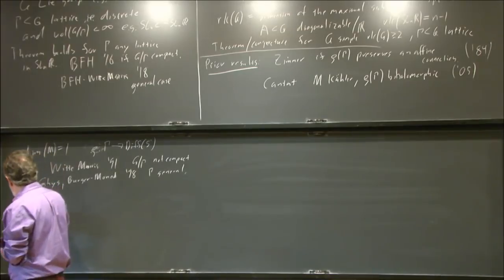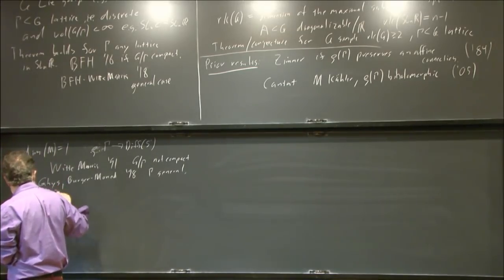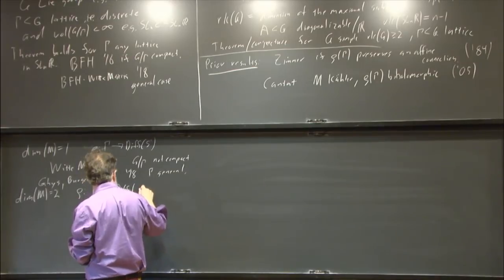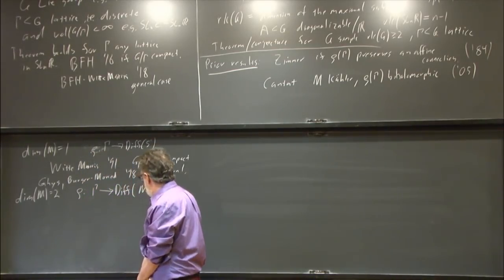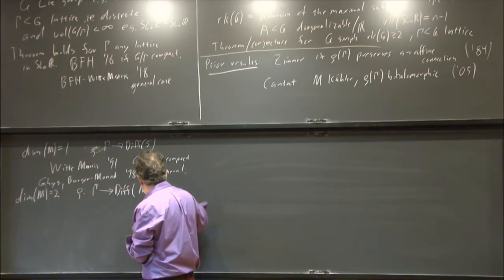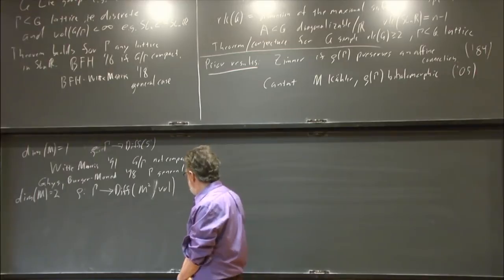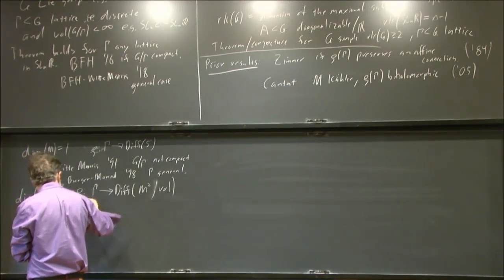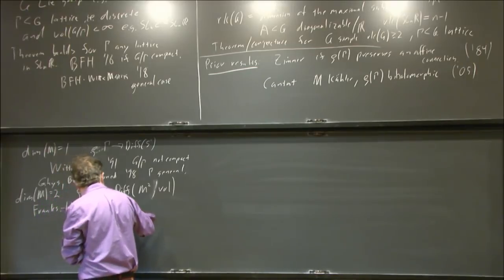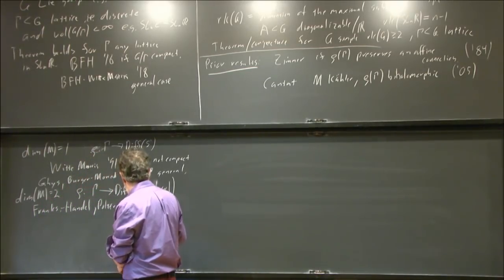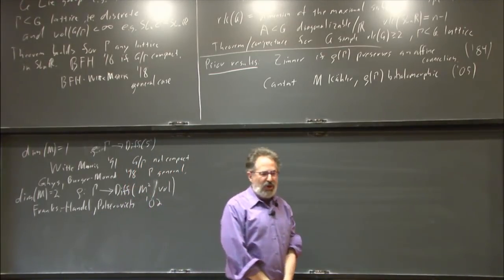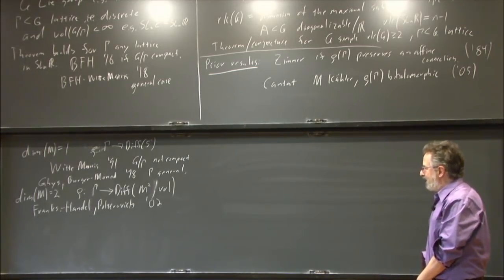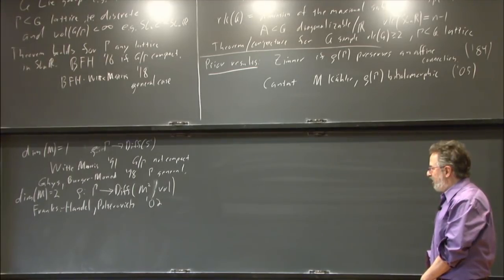Next step is dimension of M being 2, where we want rho from Gamma to diff of some surface. We make this volume-preserving, because that's the only case in which there are any results before our work. In this case, Franks and Handel, and Poltergeist independently, proved this result—the papers appeared on arXiv almost simultaneously, one in 2001 and the other in 2004. They really did these things independently and at the same time.